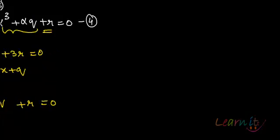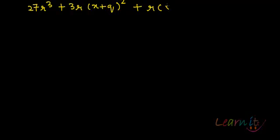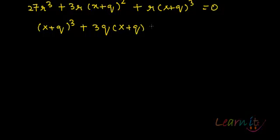Now just open it up. What will we get? We will get 27r³ plus 3rq(x+q)² by taking LCM all throughout. So this will give me (x+q)³ plus 3q(x+q)² plus 27r² equals to 0. Because r can be taken out common, each term has an r.